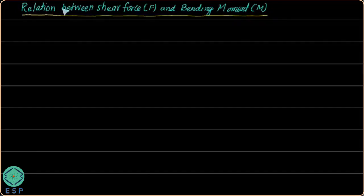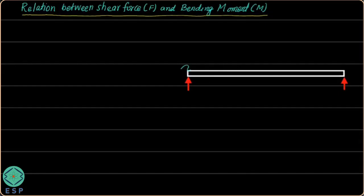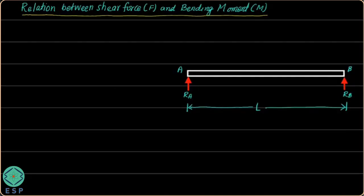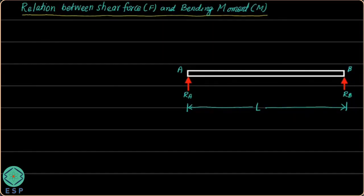Because with the help of this particular relationship we can find out how the shear force behaves at a particular point with respect to the bending moment, and how the bending moment varies with respect to shear force. So now in order to derive a relationship between shear force and bending moment, we are going to consider a simply supported beam AB with two support reactions RA acting at point A and RB acting at point B. The span length of the beam is L.